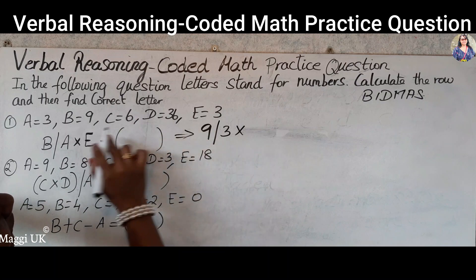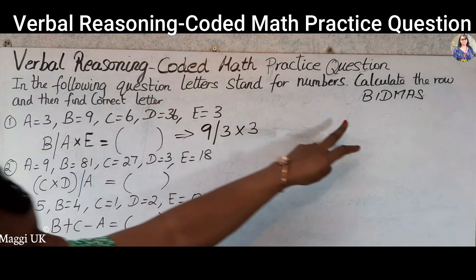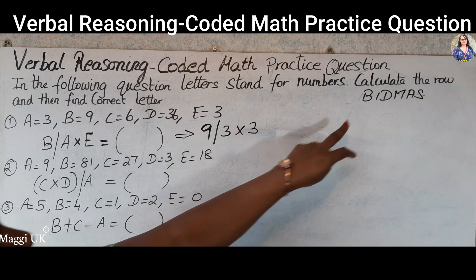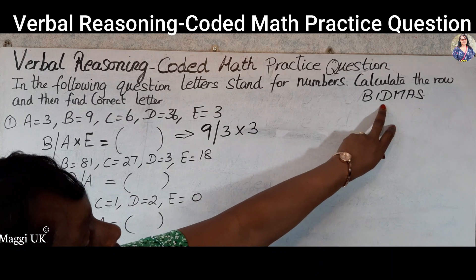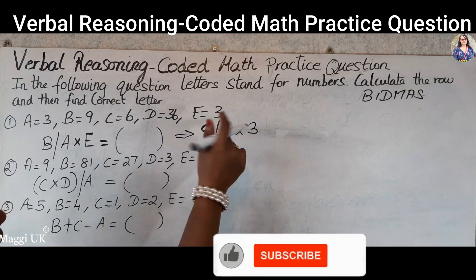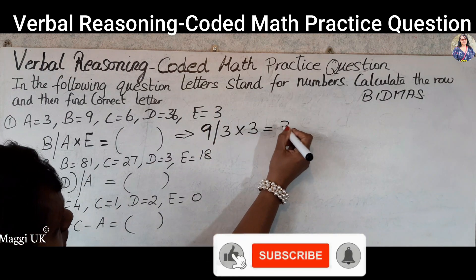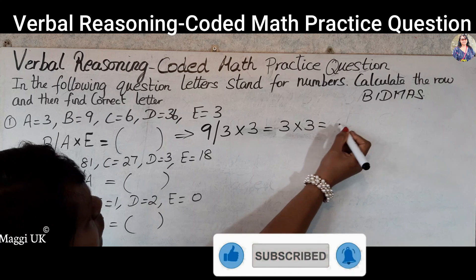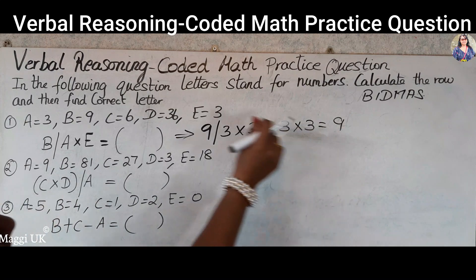By using the BIDMAS rule, the first thing that comes is division, then only you go for multiplication. So first we need to do the division: 9 divided by 3 is 3, and then again 3 times 3 is 9. So your answer is 9.